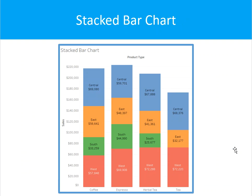Stacked bar chart — similar to the horizontal bar chart, you can use the stacked bar chart to show data in categories that are also stratified or categorized into subcategories. In the example here, we have sum of sales by product type, which is further divided into region. This allows us to see more details than in the regular bar chart. Minimum requirements are one or more dimensions and one or more measures.